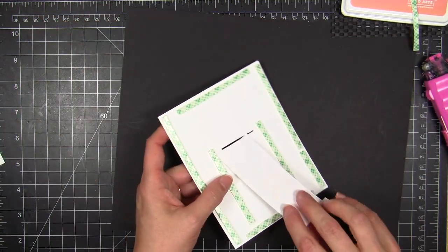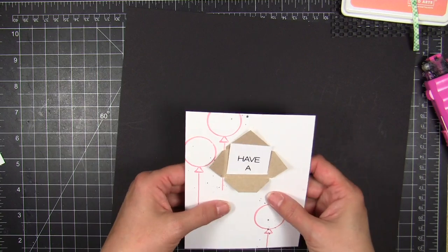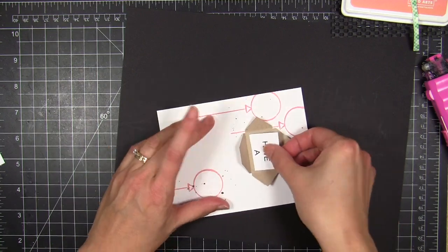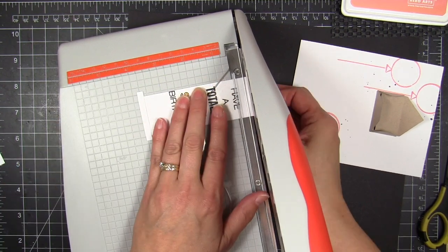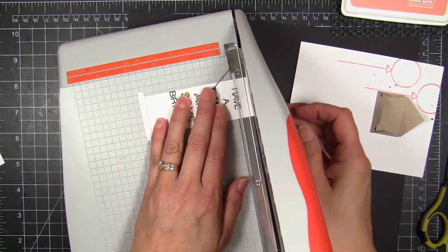And I may need to test again to make sure the top edge is as short or as tall as it needs to be to slide up and down. Now I wanted it to be hidden completely like if I wanted to close the envelope. So I'm going to trim off a little bit more.